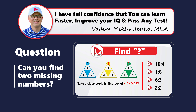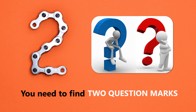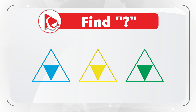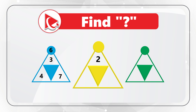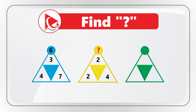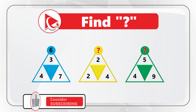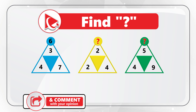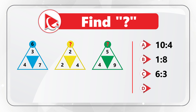Here's a phenomenal question — instead of one question mark, you need to find two. You're presented with three triangles, each with a circle on top. The blue triangle has numbers 3, 7, and 4 inside, with 6 on top. The yellow triangle has numbers 2, 4, and 2, with a missing top number. The green triangle has numbers 5, 9, and 4, with a missing top number. Select the two missing numbers from: Choice A (10 and 4), Choice B (1 and 8), Choice C (6 and 3), Choice D (2 and 2).